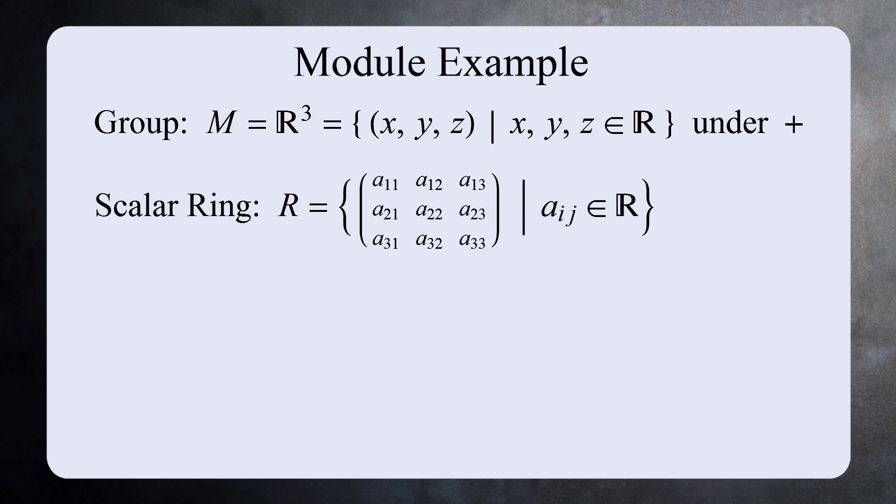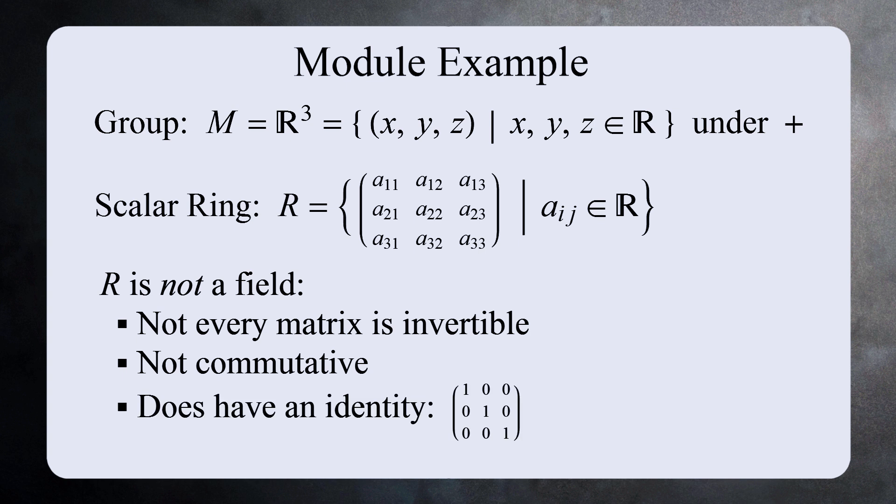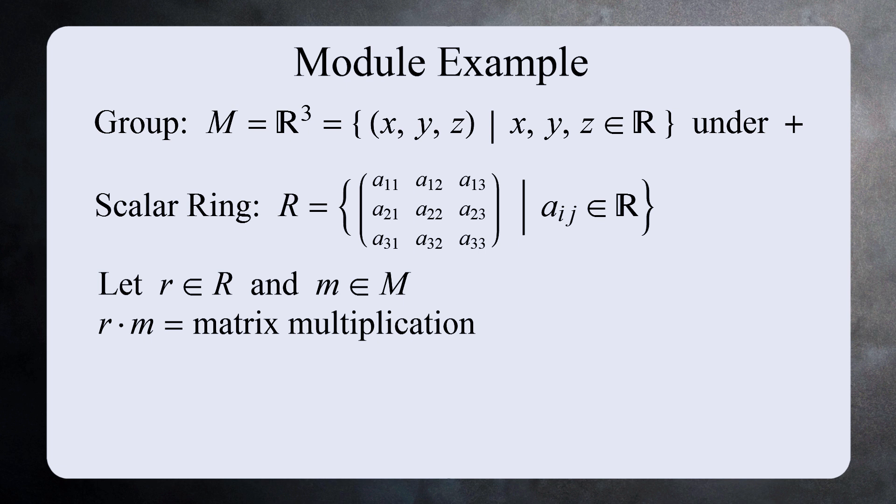Let's now see a more complex example, one where the ring of scalars is not the integers. For our group, let's use R3, the group of three-dimensional real vectors under addition. And for the ring, we'll use the 3 by 3 matrices with real number elements. This ring is definitely not a field, since not every square matrix has a multiplicative inverse, and it's not commutative either. But as a consolation prize, it does have an identity, the identity matrix. For this module, we define the action of a matrix on a vector by matrix multiplication. That is, we treat the scalar as a linear map. This example shows that modules can venture to places that vector spaces cannot go.